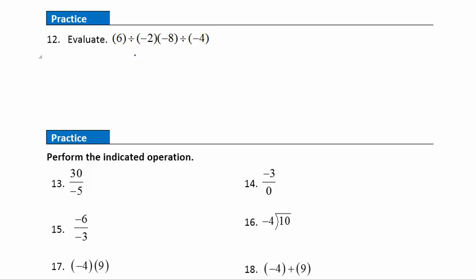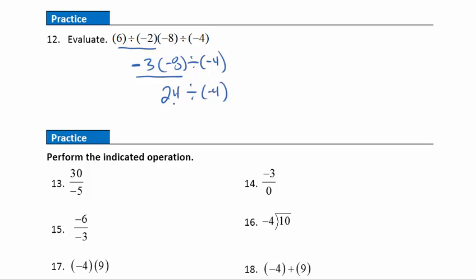Question 12: multiplication and division, so working left to right. Starting with 6 divided by negative 2 — different signs, so negative answer — giving negative 3. Then negative 3 times negative 8: same signs, giving positive 24. Finally, positive 24 divided by negative 4: different signs, giving negative 6. Final answer: negative 6.